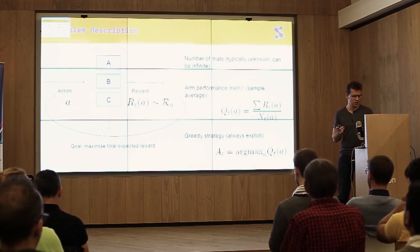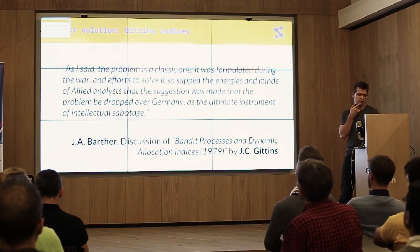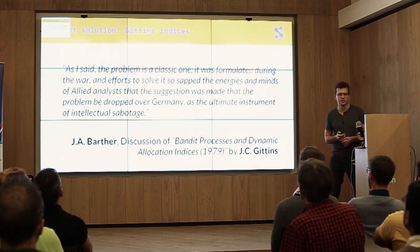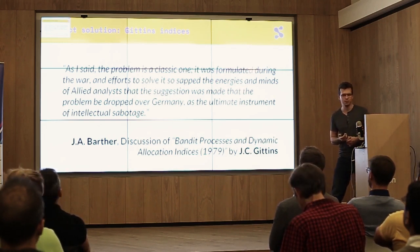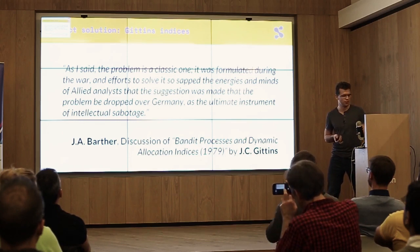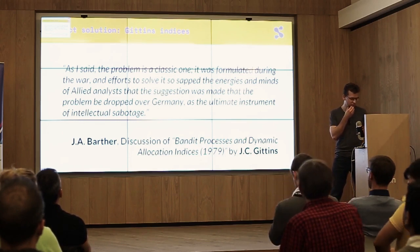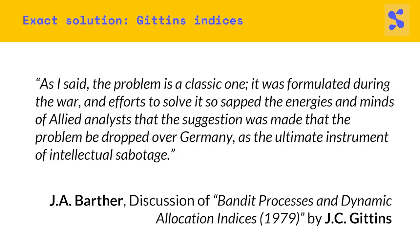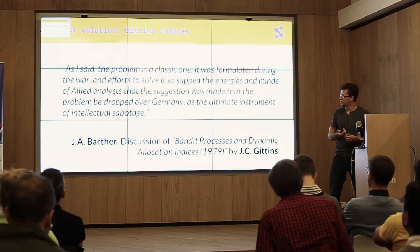So there's actually quite a bit of research about this. There is an exact solution to this problem, which is called Gittin's indices, but it only really is implementable in some certain choices for the reward distribution. And in my research on these multi-arm bandit problems, I came across this quote that I want to share with you. So the problem is a classic one. It was formulated during the war, and efforts to solve it so sapped the energies and minds of allied analysts that the suggestion was made that the problem be dropped over Germany as the ultimate instrument of intellectual sabotage. So you can imagine how I feel.